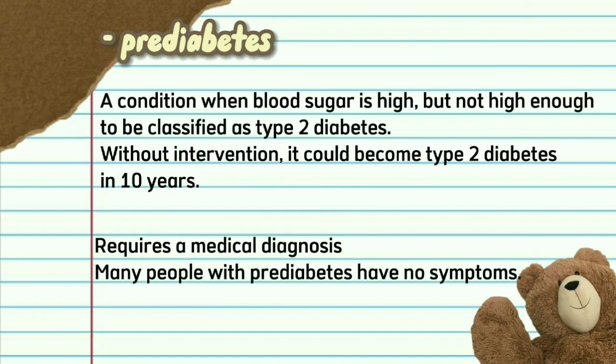Pre-diabetes: a condition when blood sugar is high, but not high enough to be classified as type 2 diabetes. Without intervention, it could become type 2 diabetes in 10 years. Requires a medical diagnosis.